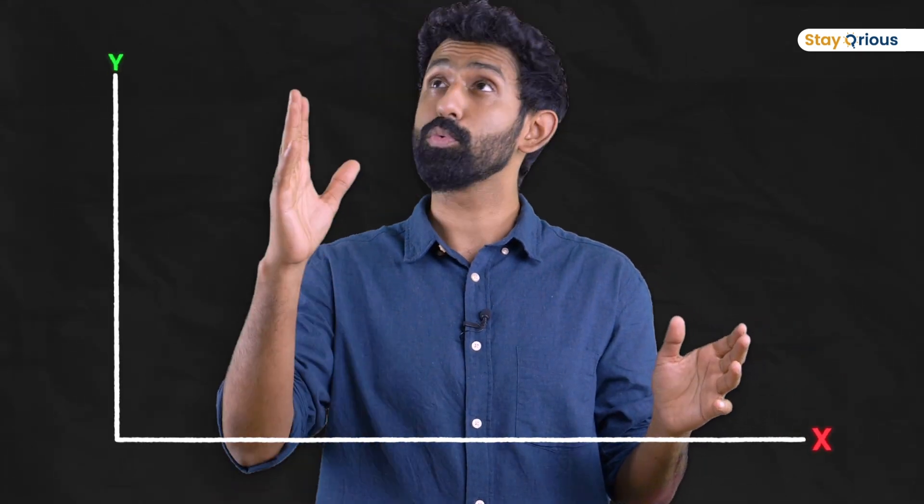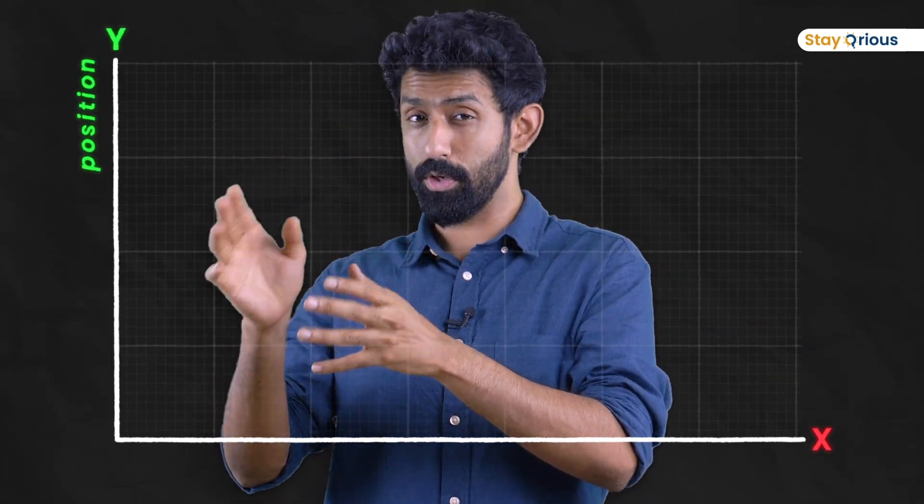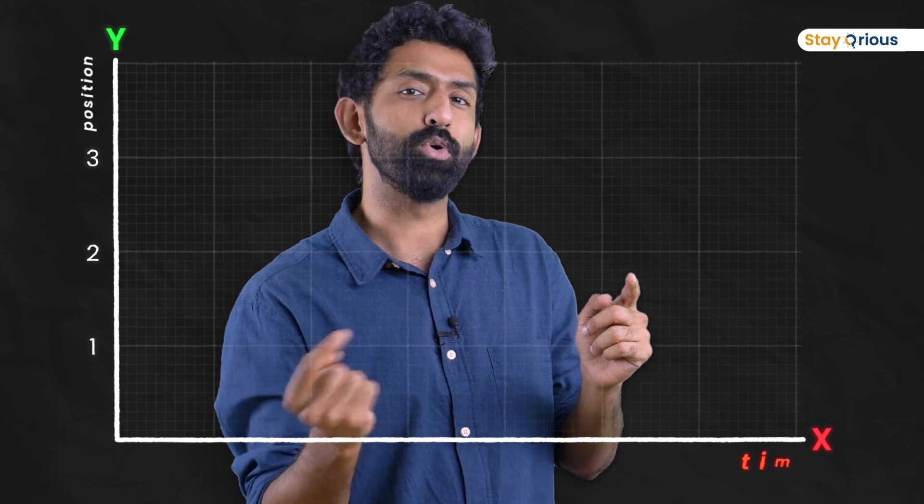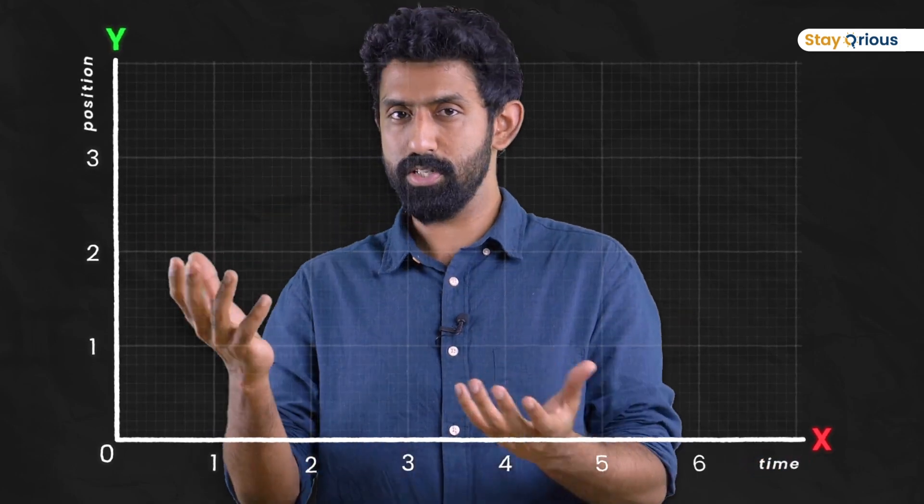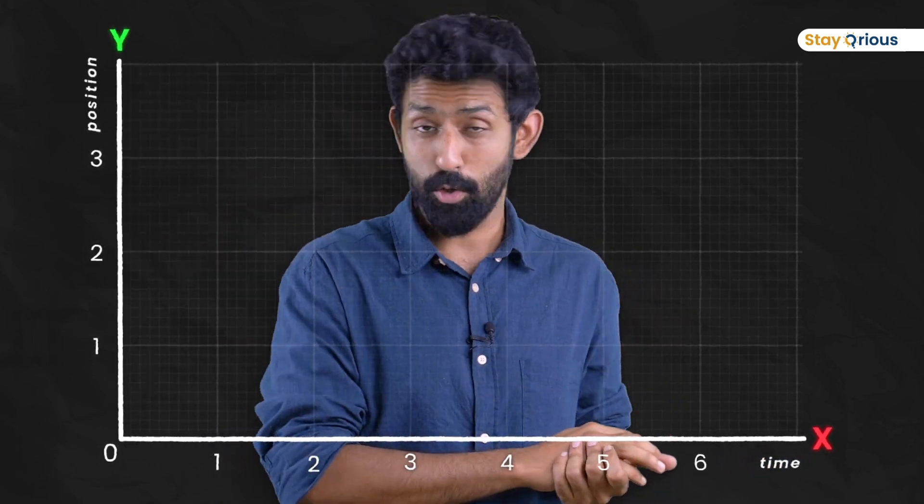What can we tell about the speed or the rate of something looking at the graph? That's the question. Let's draw the x-axis and the y-axis. The position is changing over here, the time is going over here. That's why we call it a position-time graph.